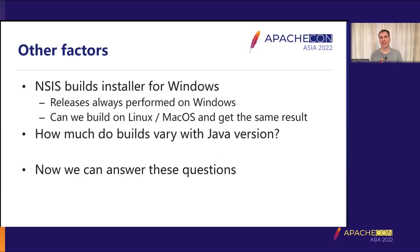The other question was: exactly how important is it that we build with exactly the right Java version? Historically, Tomcat has always been built with the latest available release of the minimum Java version that that version of Tomcat is required to support. So Tomcat 8.5 is built with the latest Java 7, Tomcat 9 and 10.0 with the latest Java 8, and Tomcat 10.1 with the latest Java 11. An open question is: if we build Tomcat 8.5 with Java 11 configured to build Java 7 compatible binaries, is that actually the same? With reproducible builds, we can vary the Java version and see what changes and, more importantly, what doesn't.